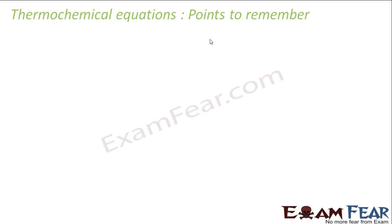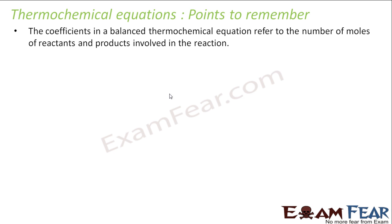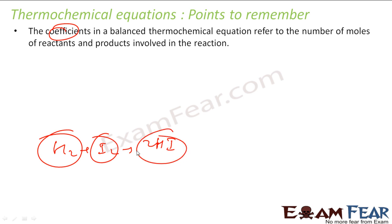Let's understand some points to remember for thermochemical equations. First, the coefficients in the balanced chemical reaction refer to the moles of reactants and products. For example, H2 plus I2 gives 2HI means 1 mole of hydrogen, 1 mole of iodine gives 2 moles of HI.